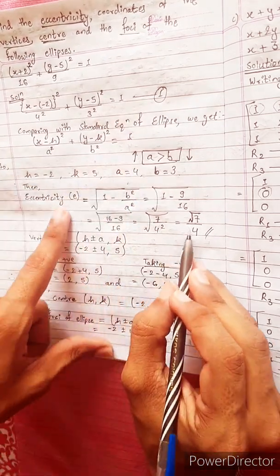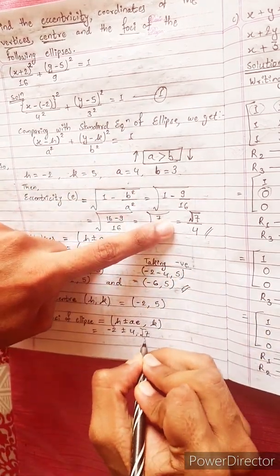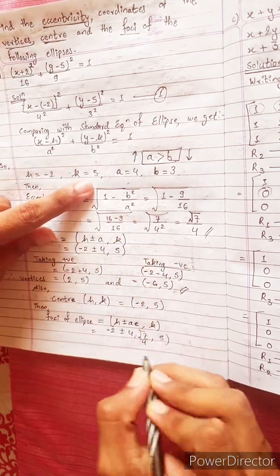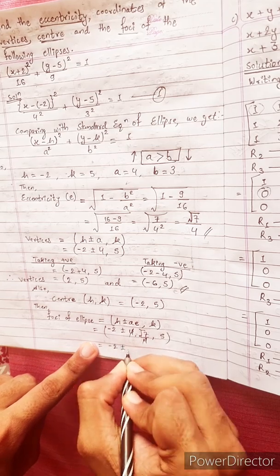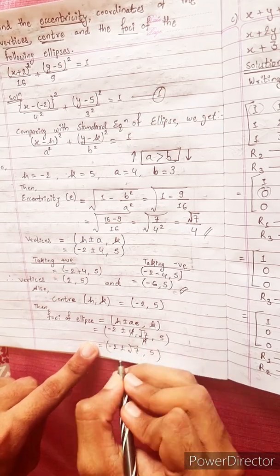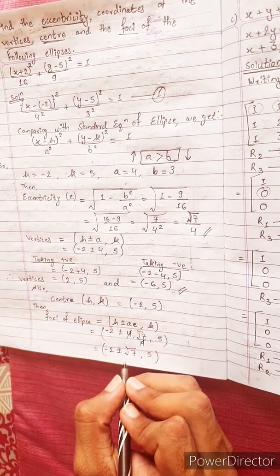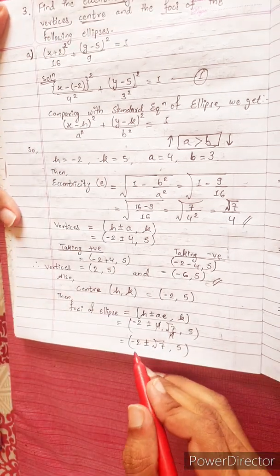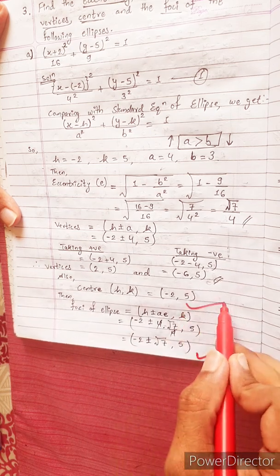Eccentricity e equals under root 7 by 4. Foci: the ae value is 5, so 4 cancels, giving foci at minus 2 plus minus under root 7, comma 5. Taking plus and minus separately, we get minus 2 plus under root 7, comma 5, and minus 2, comma 5.